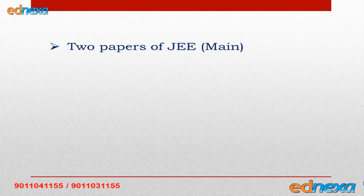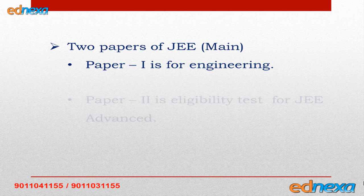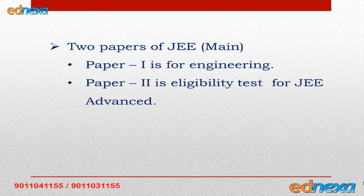For JEE Main there will be two papers. A student can appear for either of the two or both papers. Paper one is to get admission in engineering, and paper one is also an eligibility test for JEE Advanced.